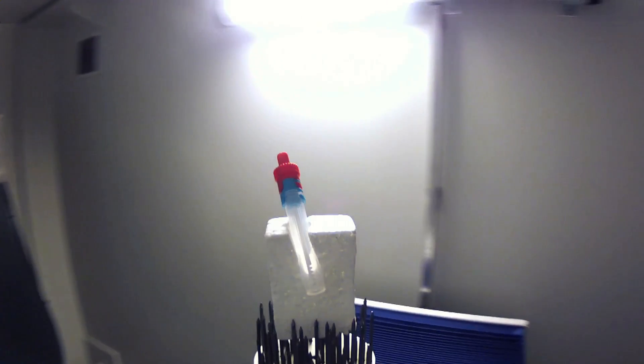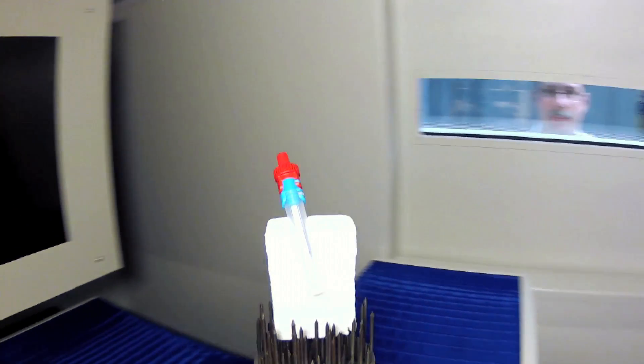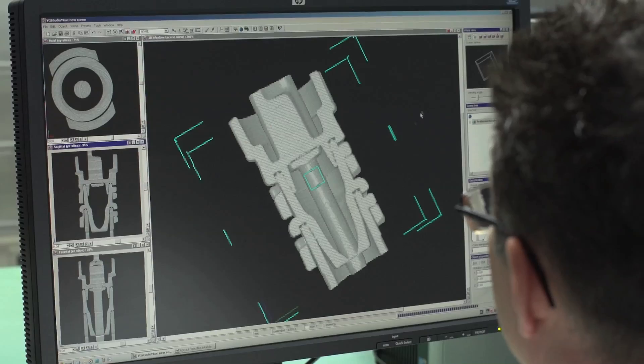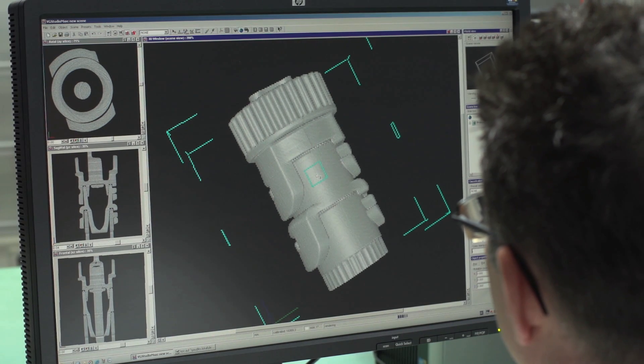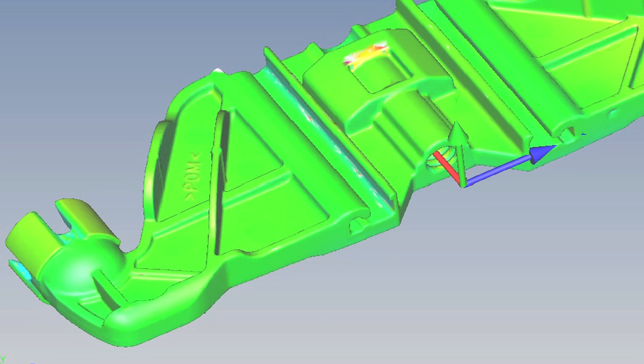A three-dimensional model of the measurement is then created on a computer. These can then be used to create layer models to identify defects inside a part. Volume models that use color displays also show if the specified tolerances have been met.